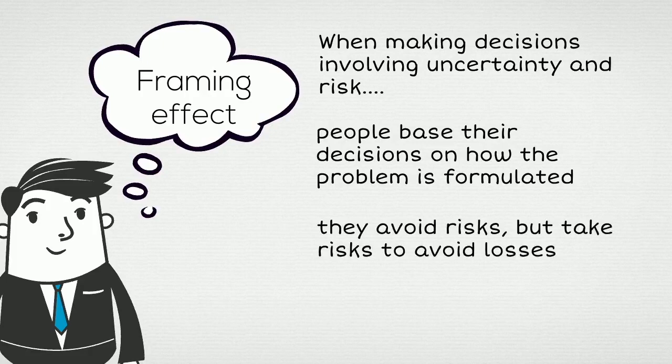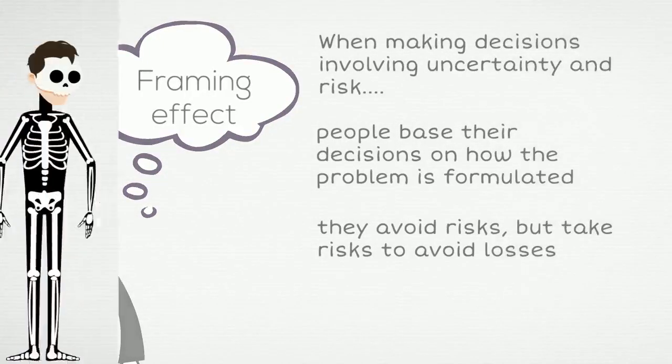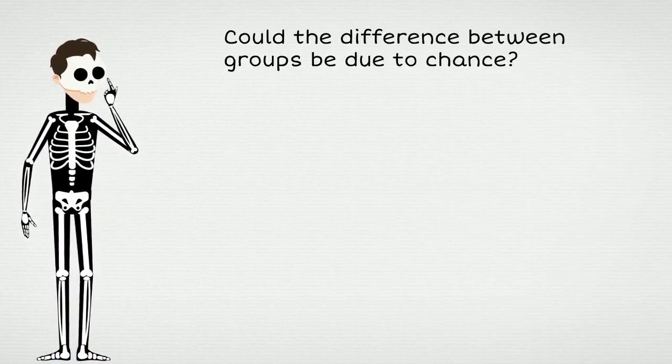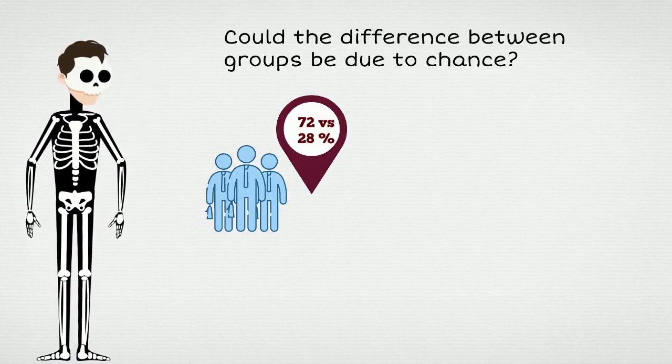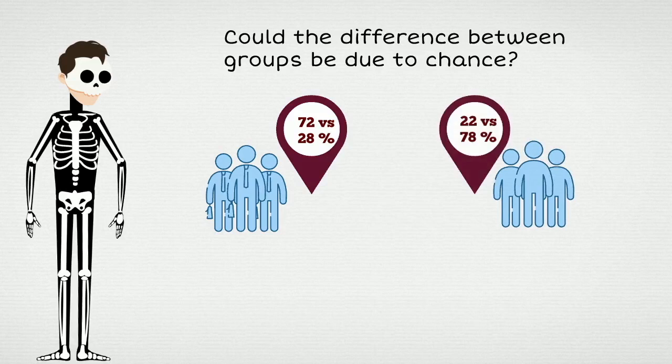But wait a minute. How could Tversky and Kahneman be sure that framing effect is a thing? Could it be that the results of their experiment were due to simple chance? The choice reversal where 72% of participants in one group choose one option and almost the same percentage of participants in the other group choose the other option is impressive, but the sample size in this study is quite small.